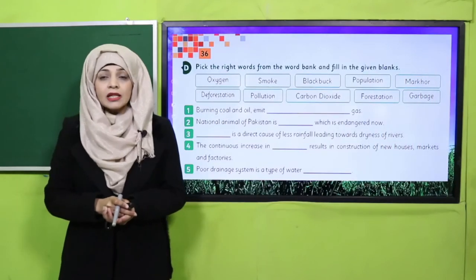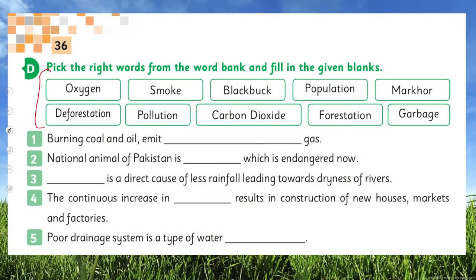Now we will move to page number 36 for fill in the blanks. Many words are given; you have to fill the correct word in the correct blank. First one: burning coal and oil emit carbon dioxide gas. National animal of Pakistan is Markhor, which is endangered now. Deforestation is the direct cause of less rainfall, leading towards dryness of rivers. The continuous increase in population results in the construction of new houses, markets, and factories. Poor drainage system is a type of water pollution.